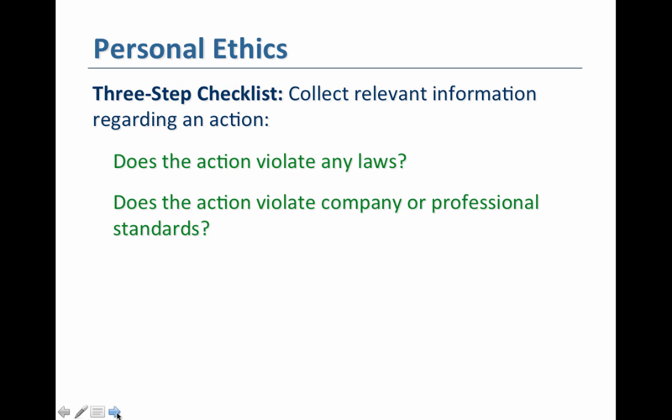The last one is a three-step checklist that helps collect relevant information about an action. First: did the action violate any laws? Obeying the laws is obviously in your best interest. Second: does the action violate company or professional standards? It may be legal but violate the standards of your profession, impacting job security or certifications — you can be disbarred for unethical behavior in the legal environment, for example. And third, even if the other two are fine, figure out how that action will impact other individuals or groups of people. That last question is especially important — significant negative implications for individuals involved is something to seriously consider.